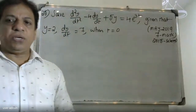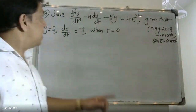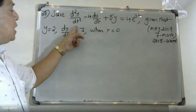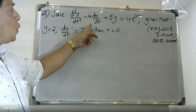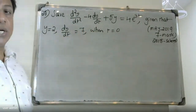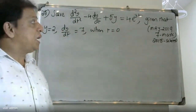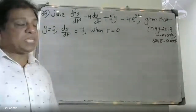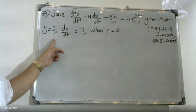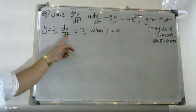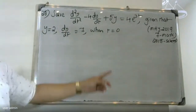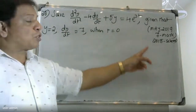Good morning students. This problem has the differential equation y'' minus 4y' plus 5y is equal to 4 times e raised to 3t, given that y(0) is equal to 2 and y'(0) is equal to 7 when t is equal to zero. This is the main equation.